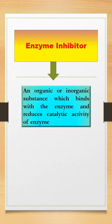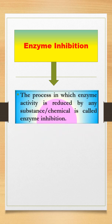An enzyme inhibitor is defined as an organic or inorganic substance which binds with the enzyme and reduces the catalytic activity of that enzyme. Inhibition is the process in which enzyme activity is reduced by any substance.